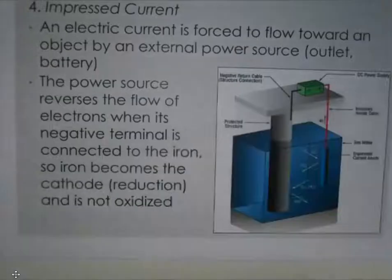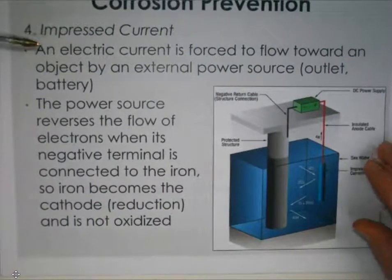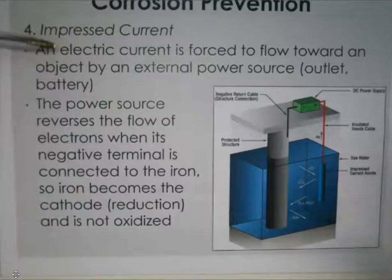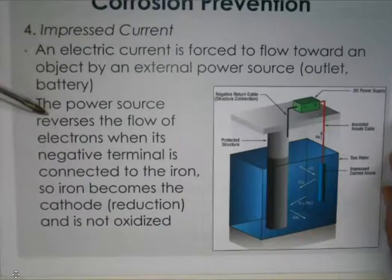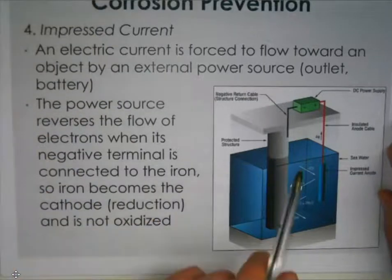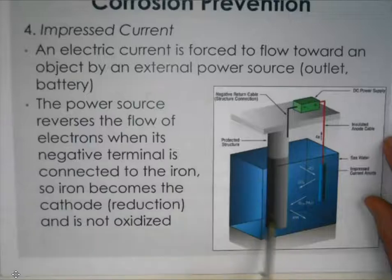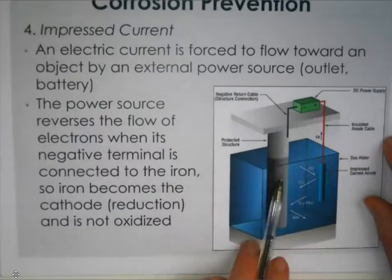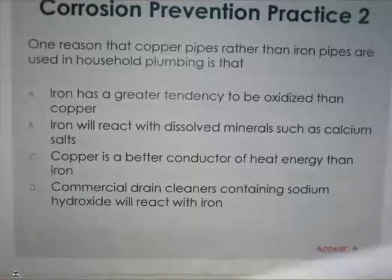The last method is impressed current. An electric current is forced to flow toward the object via an external power source, similar to an electrolytic cell. This reverses the electron flow so the object becomes the cathode — it's being reduced rather than oxidized. Essentially, electrons are forced onto the structure being protected, preventing its oxidation. Remember the name: impressed current.